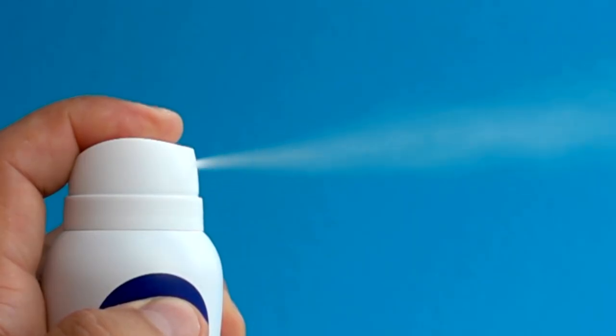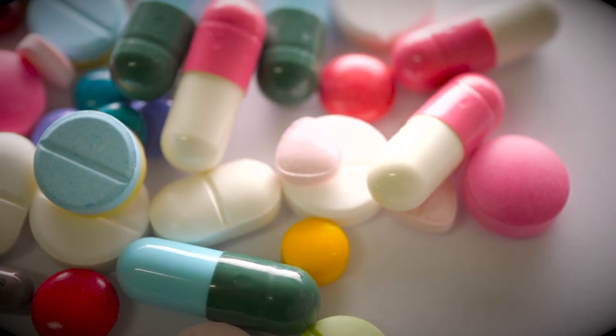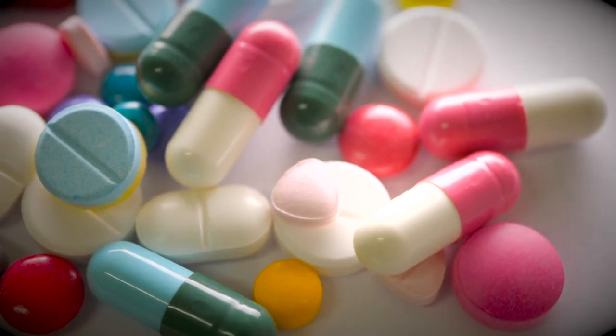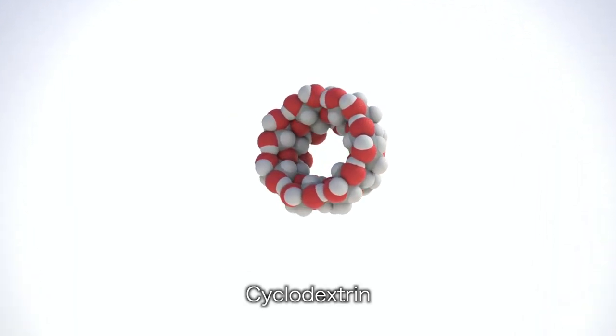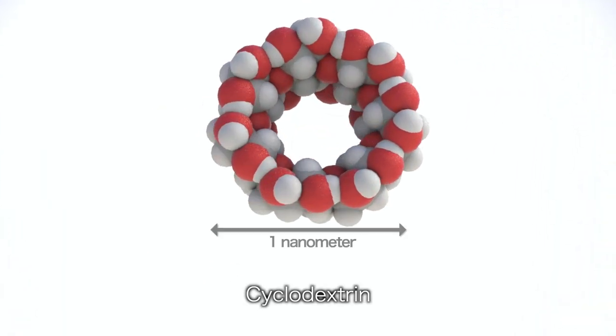What do many fragrances, deodorizers, flavorings, and even drugs have in common? The answer lies in the tiny hole inside cyclodextrin, a ring-shaped molecule made of naturally occurring sugars.